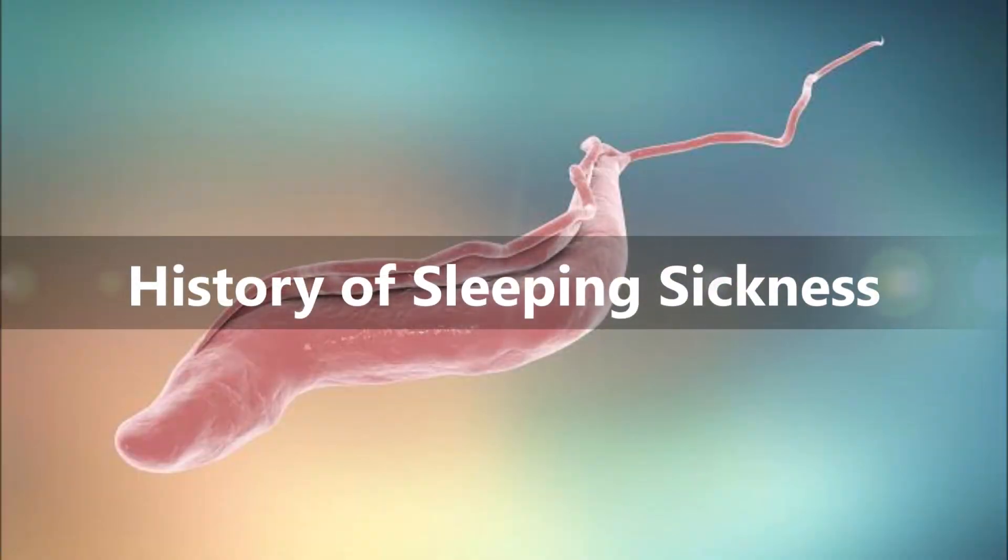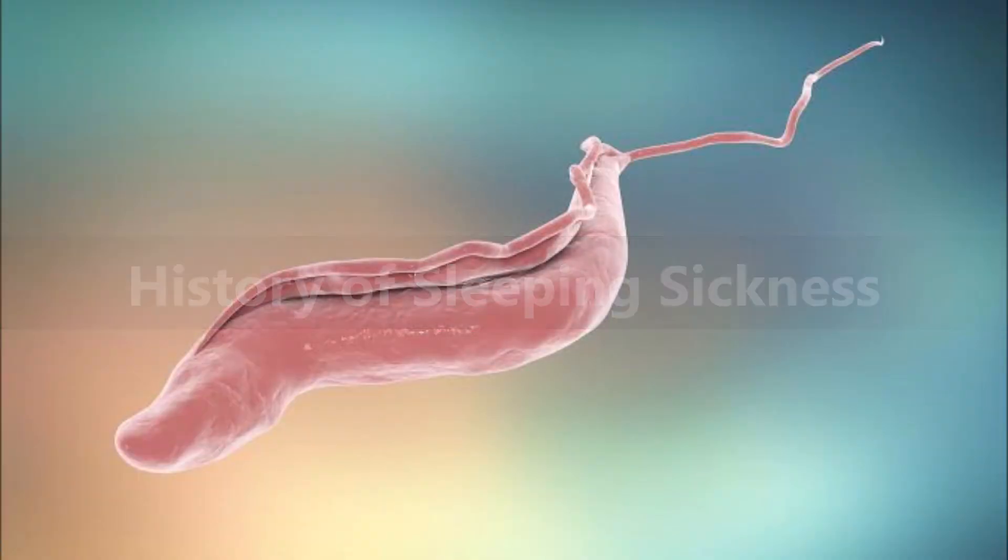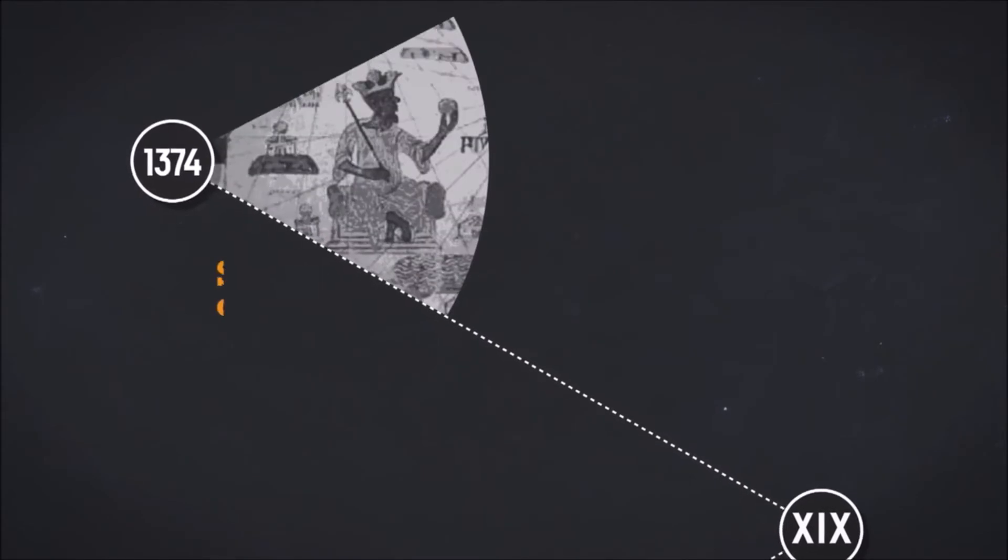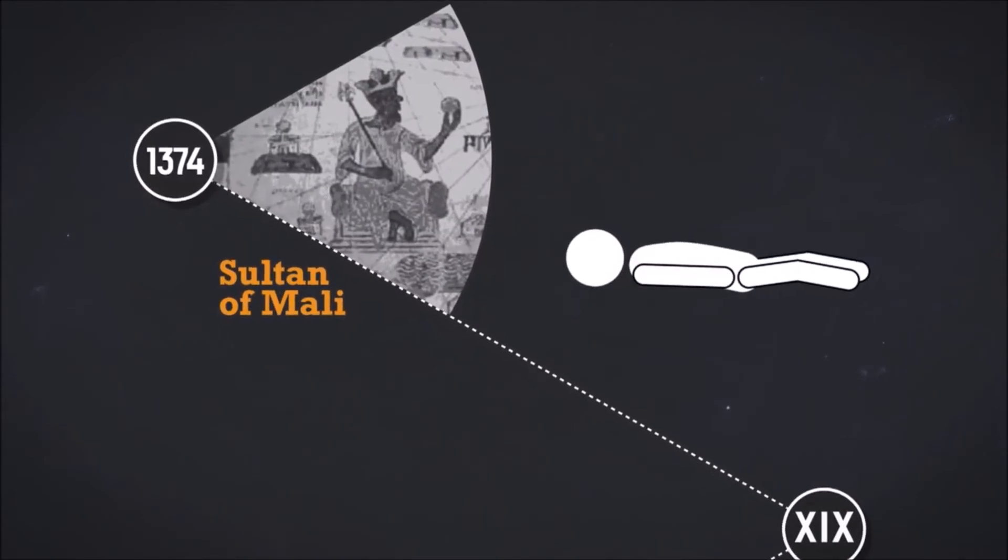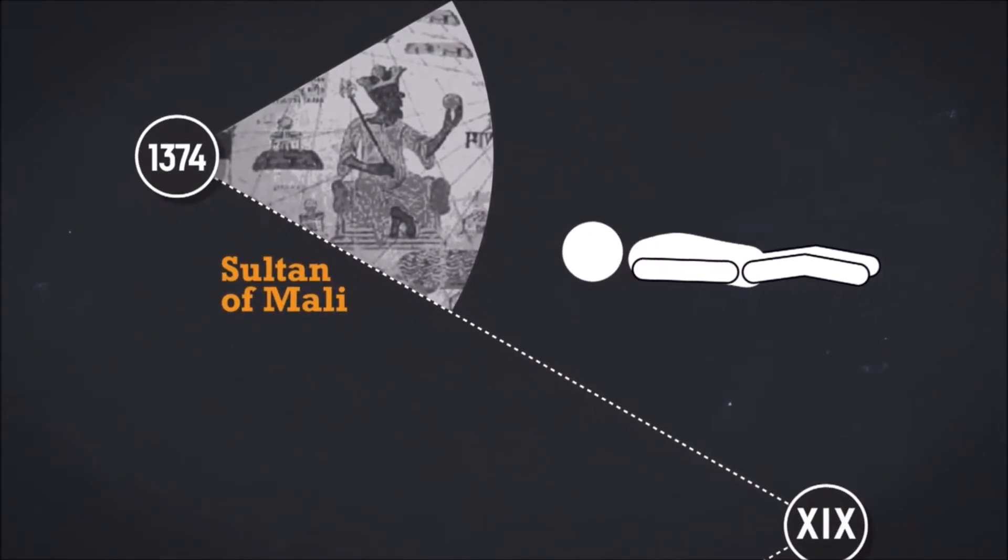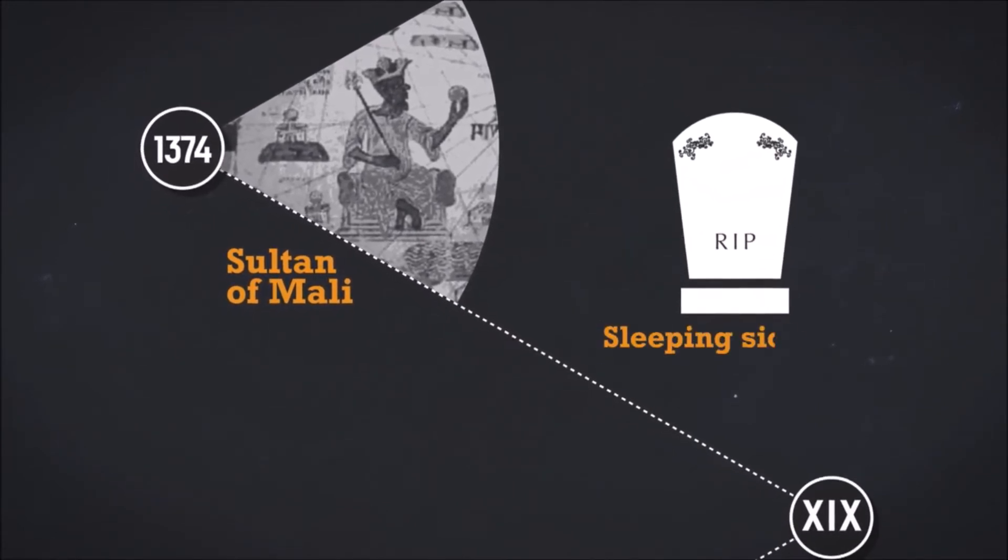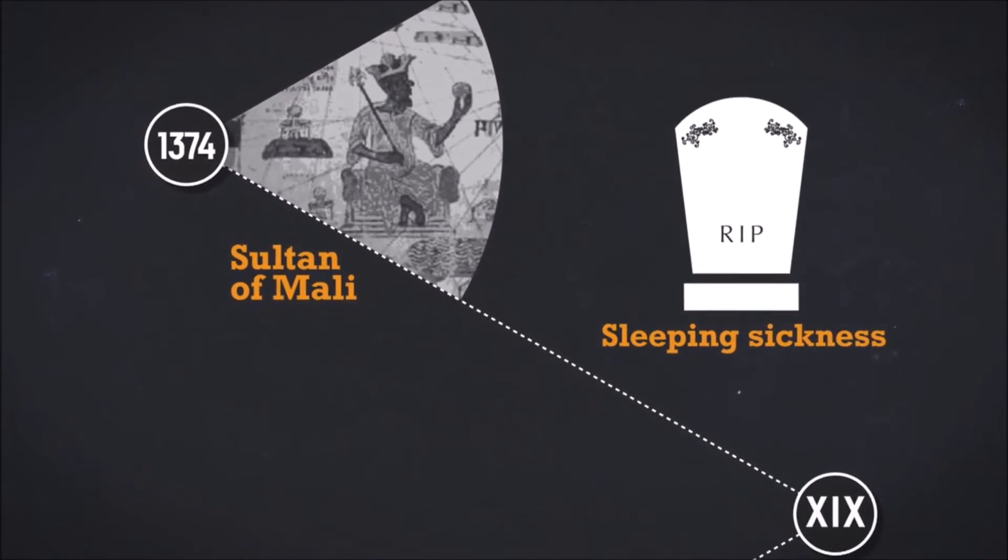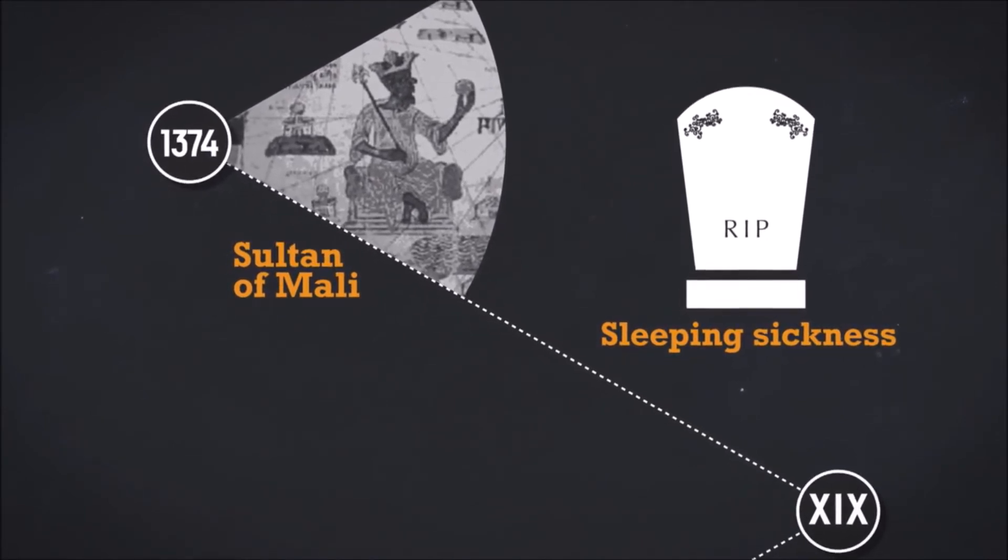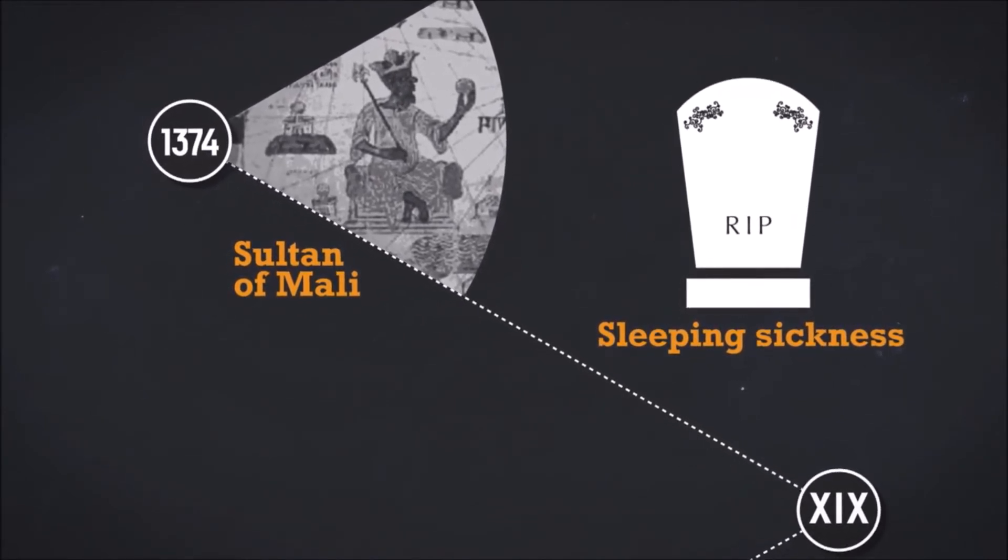Let's see very short history about sleeping sickness. In 1374, the gravely ill Sultan of Mali fell into a torpor from which he would never recover. His death was the first to be attributed to what would become known as sleeping sickness. Between the 14th and 19th centuries, sleeping sickness became increasingly common.